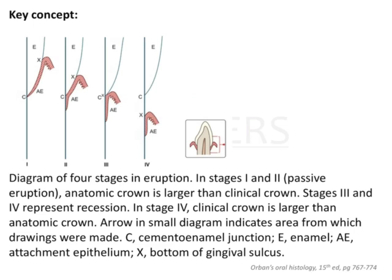These four images depict the four stages. In Stage 1, we can see the CEJ (cementoenamel junction), the apical part of the attachment epithelium, and the bottom of the gingival sulcus. Here, the apical part of the attached epithelium is at the CEJ and the bottom of the sulcus is on enamel — this is Stage 1.